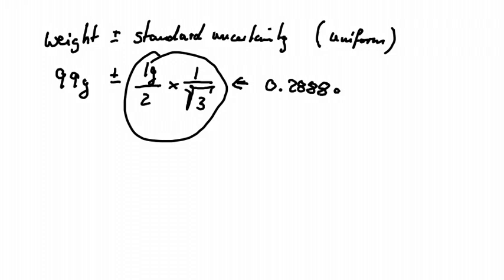So that would be our standard uncertainty, and of course we need to make sure that we report things in the right format. So we know that we should report a standard uncertainty or any uncertainty only to one significant figure.